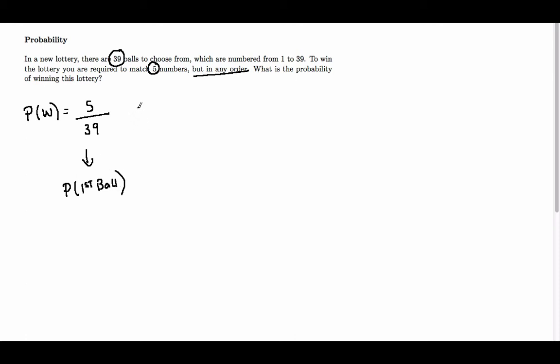Now the probability of getting the second ball is 4 because we've now taken one of our balls out and there are only 38 balls left in the pot. So this is the probability of getting the second ball.